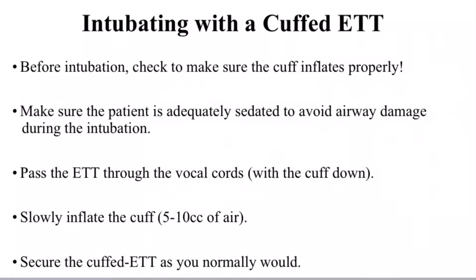When intubating with a cuffed endotracheal tube: before intubation, check to make sure the cuff inflates properly. Make sure the patient is adequately sedated to avoid airway damage during the intubation. Pass the endotracheal tube through the vocal cords with the cuff down, then slowly inflate the cuff with 5 to 10 cc's of air. Secure the cuffed endotracheal tube as you normally would.